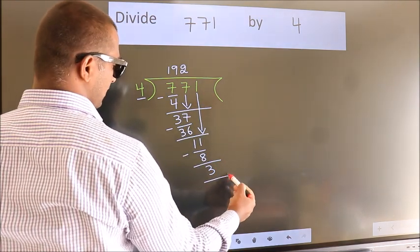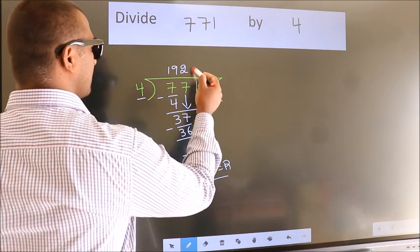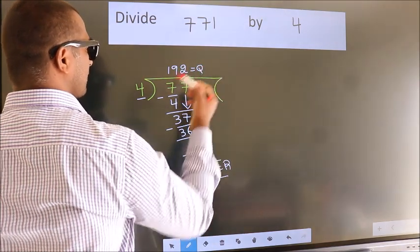So we stop here. This is our remainder. This is our quotient.